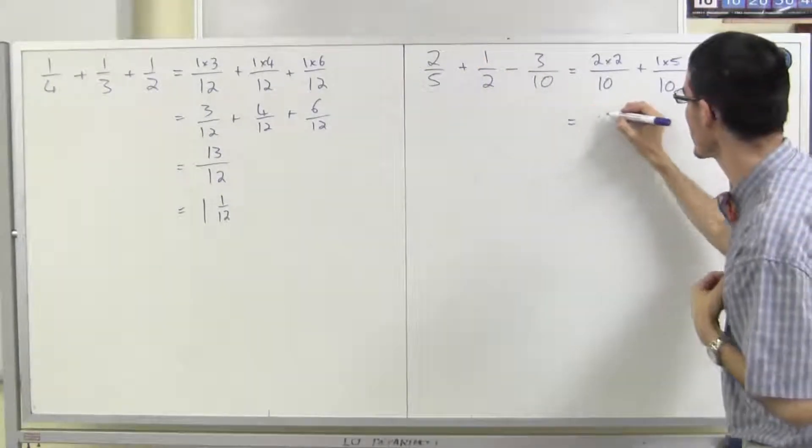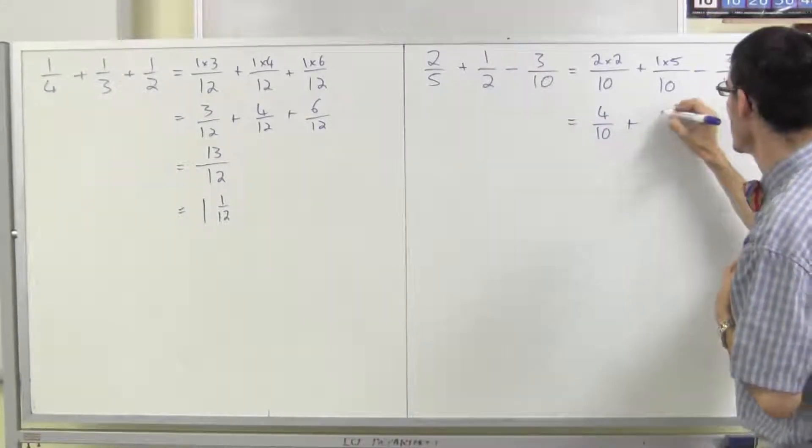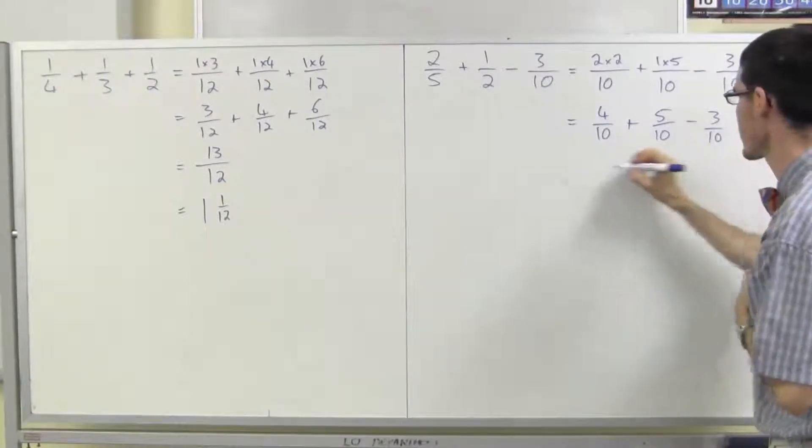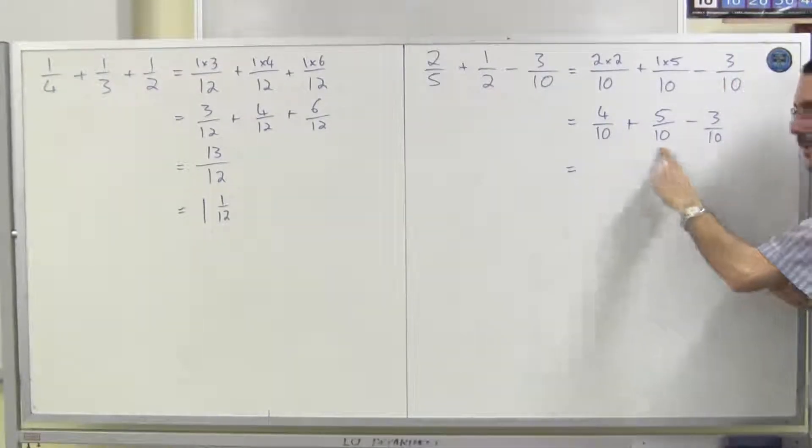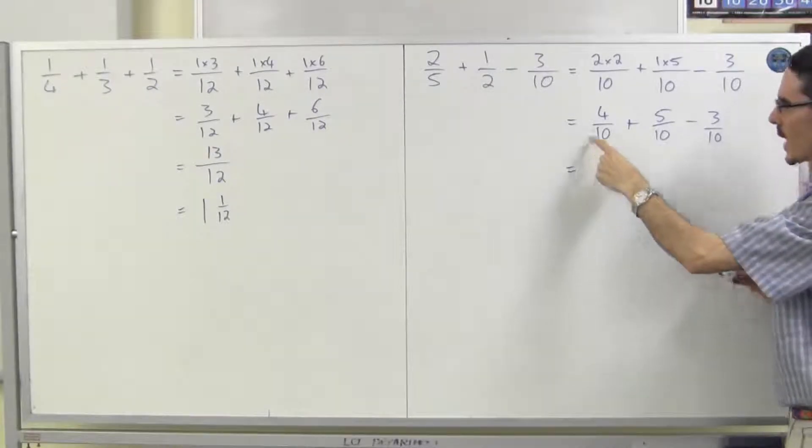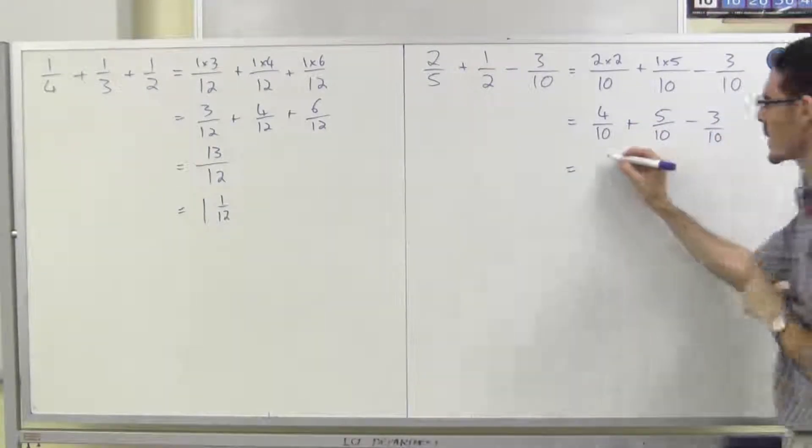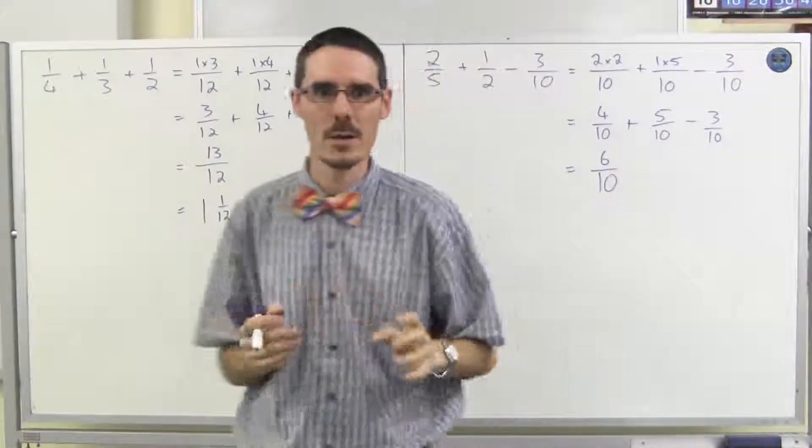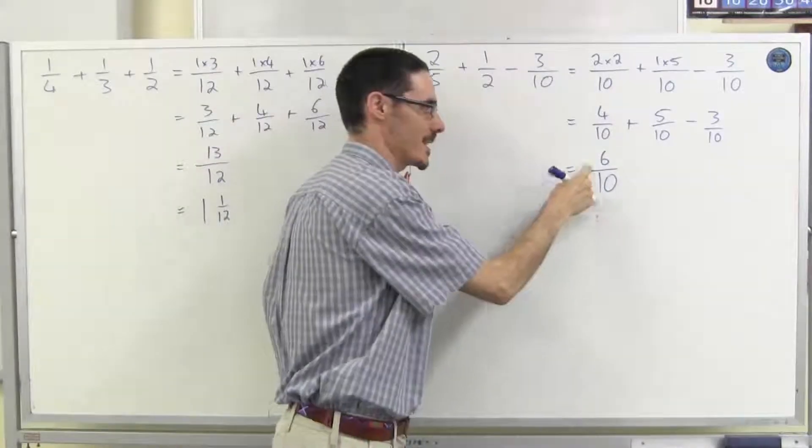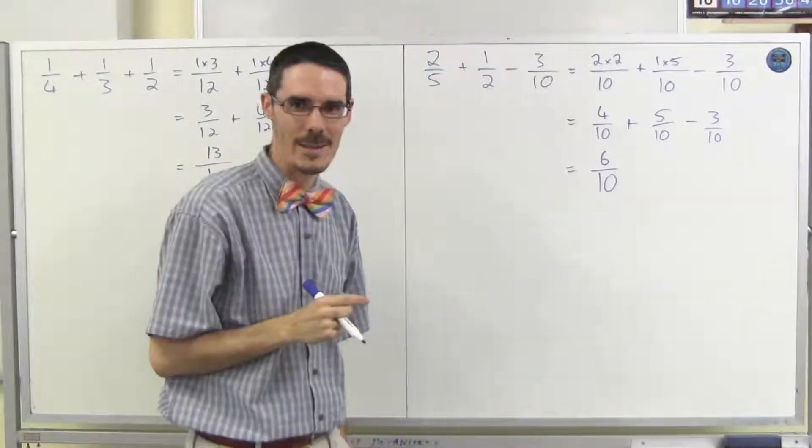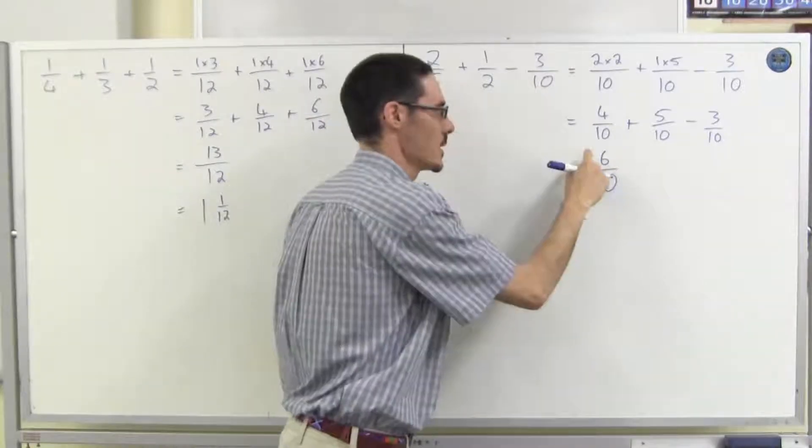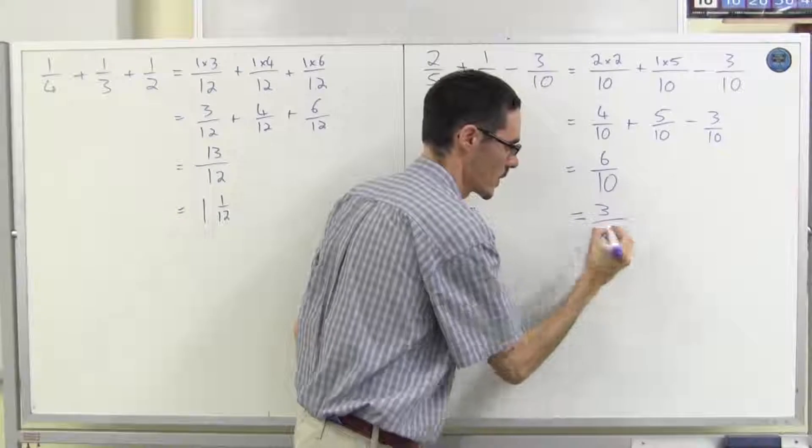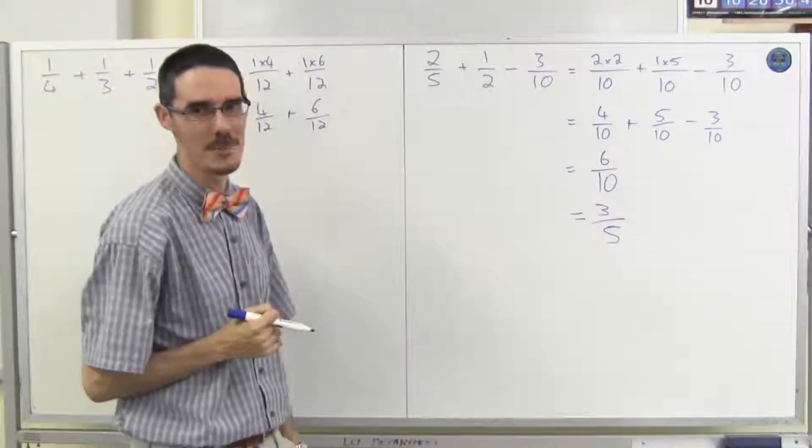Simplify. 4 tenths, 5 tenths, and 3 tenths. Well now they've all got the same denominator. Let's just work it out. 4 plus 5 is 9, take away 3 is 6. I'm done. No I'm not. 6 and 10 have a common factor, 2. Well divide this by 2 and divide that by 2. Now I'm at the end.